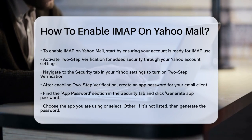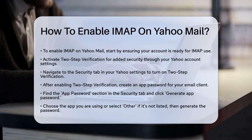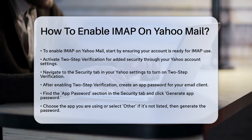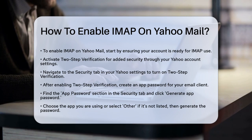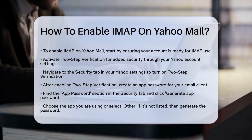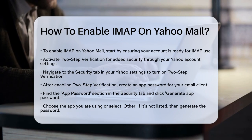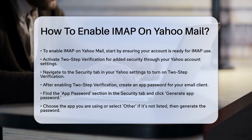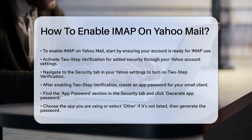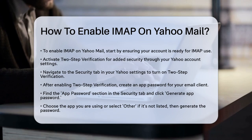First, you need to ensure that your Yahoo account is set up to use IMAP. To do this, you'll need to enable two-step verification. This is a security feature that adds an extra layer of protection to your account. Go to your Yahoo account settings, select the Security tab, and turn on Two-Step Verification.